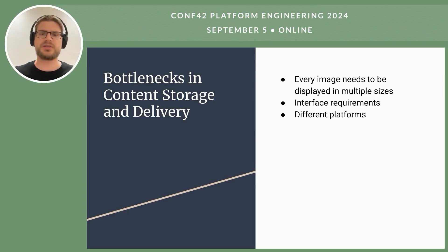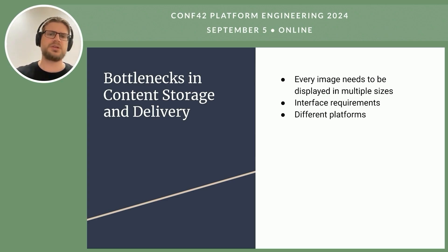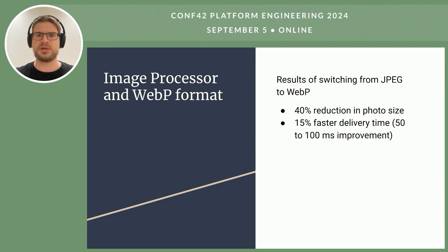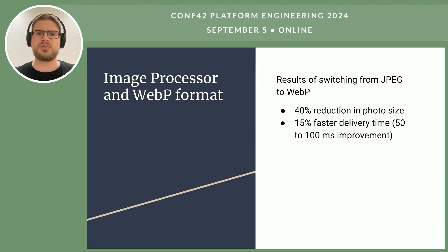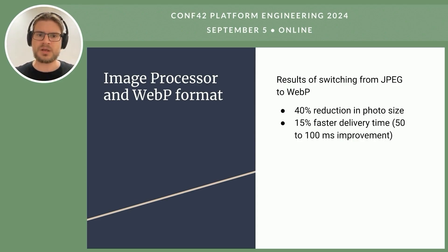Images emerged as a critical bottleneck in the social network. The same image needs to be displayed in multiple sizes due to interface requirements and different platforms — mobile with retina, non-retina, web, and so on. Previously, pre-resized images occupied a significant amount of storage space. Now the team eliminated pre-cut sizes and implemented dynamic resizing, introducing a microservice called the image processor that generates required sizes on the fly. They also transitioned to serving images in WebP format. These optimizations led to significant improvements and it's always worth identifying and optimizing the biggest bottlenecks for better performance.